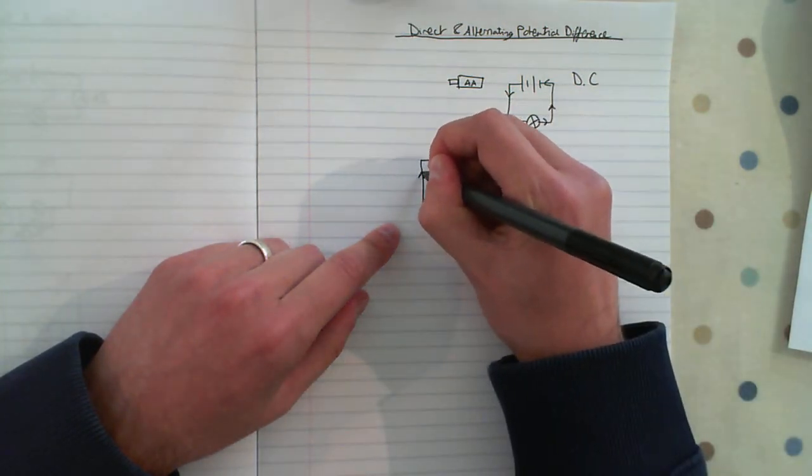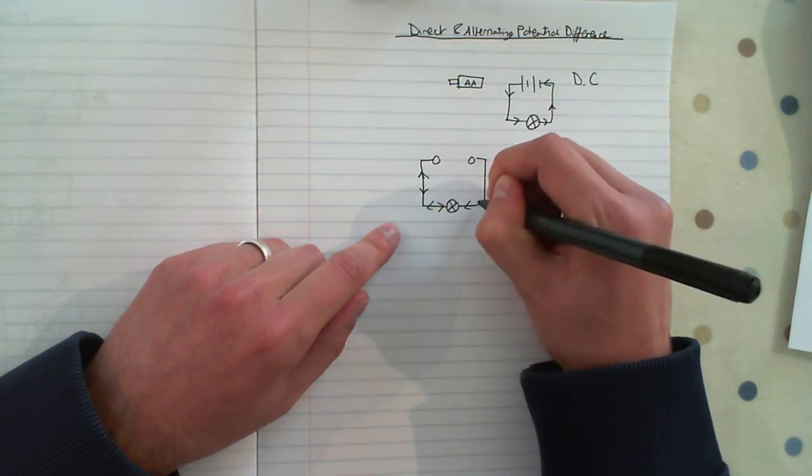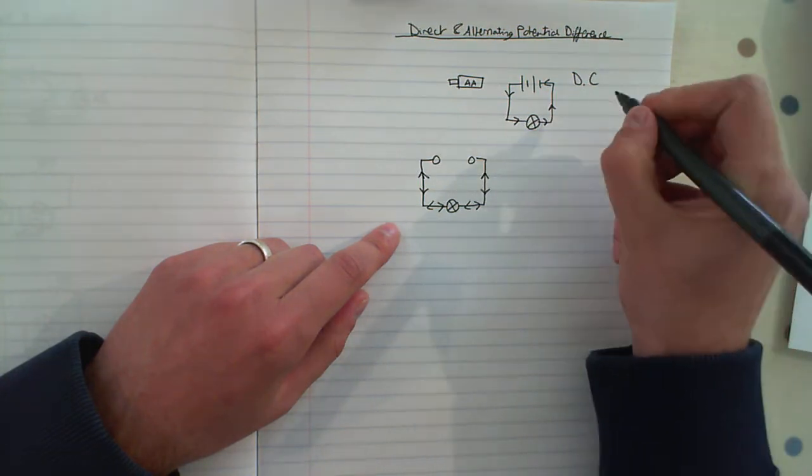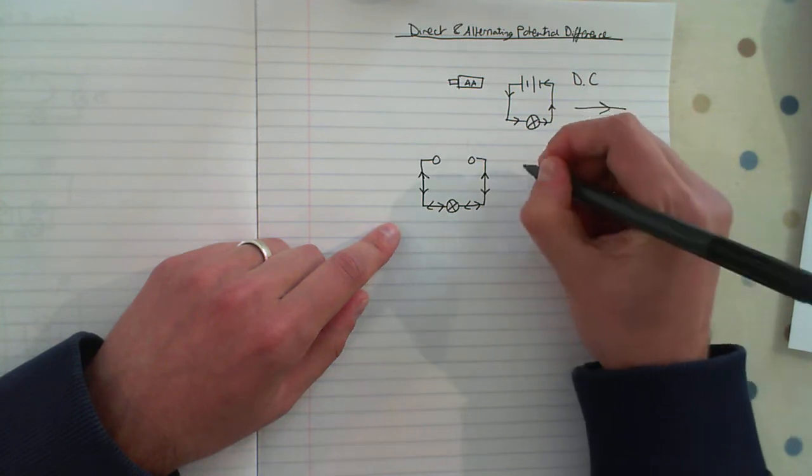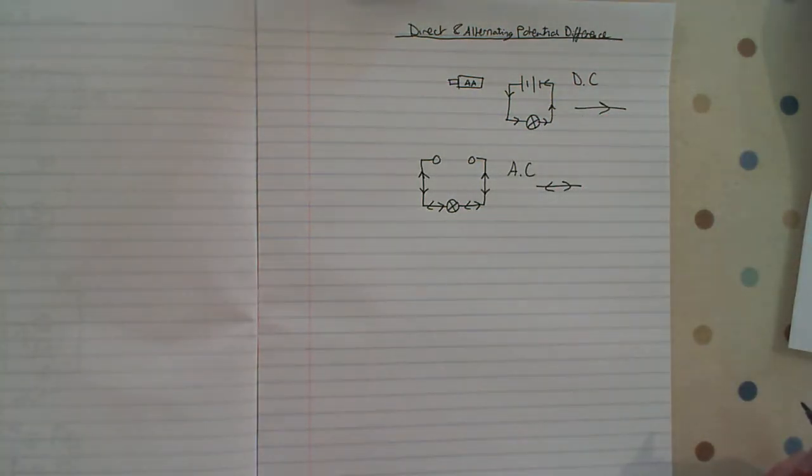And what alternating current does is it goes backwards and forwards. It's alternating direction. So if direct current only flows in one direction, alternating current is shuffling. It's alternating backwards and forwards. It's not going in both directions at once, it's alternating in both directions.